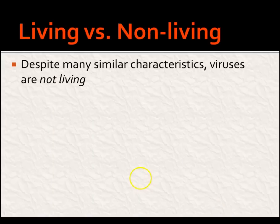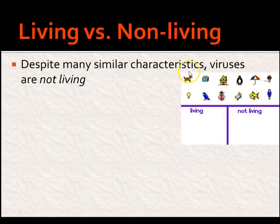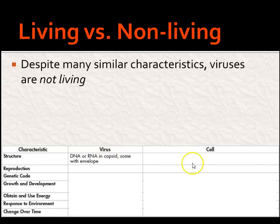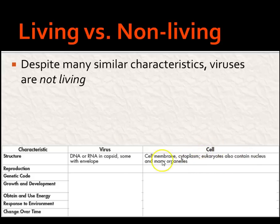Let's go over the living versus non-living. Despite a lot of similar characteristics to cells, viruses are not alive. Looking at virus versus cell: the basic structure of a virus is just DNA or RNA in a capsid — some have an envelope. Remember, it's like the M&M: the chocolatey goodness and the candy shell. Cells, however, have a cell membrane, cytoplasm, and eukaryotes have a nucleus and all those different organelles. Cells are way more complex; viruses, not much to them.